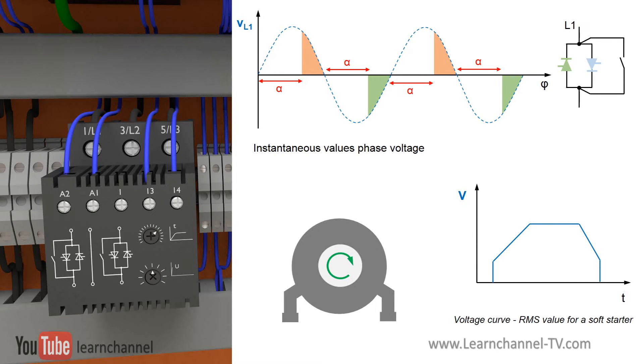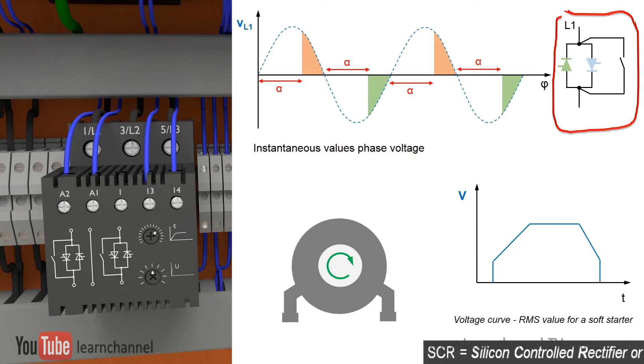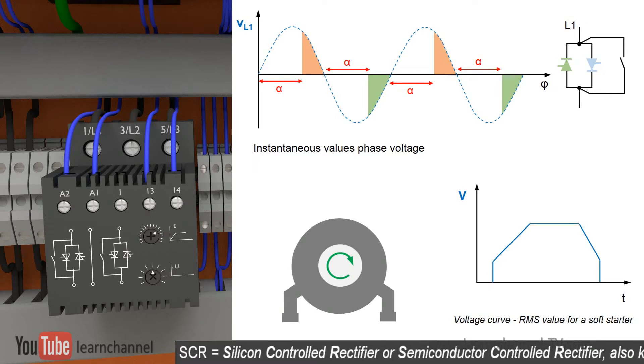For this purpose, two SCRs are connected in anti-parallel for each phase, one SCR for the positive half-wave and the second for the negative half-wave.